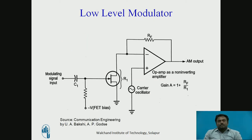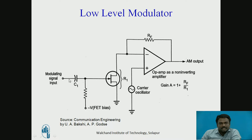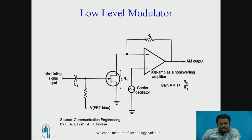There are two types of modulation techniques: low-level and high-level. In the low-level modulator circuit, you can see there is a field effect transistor, a feedback resistor, an operational amplifier, a carrier signal generator, and a modulating signal input. The carrier oscillator is connected to the non-inverting terminal of the operational amplifier, whereas the modulating signal is connected to the base of the field effect transistor. The FET is used as a variable resistor, RF is used as a feedback resistor for the operational amplifier, and the op-amp is used as a non-inverting amplifier for the carrier signal.